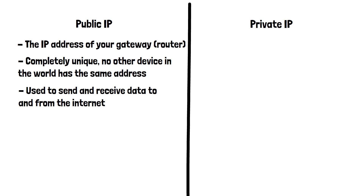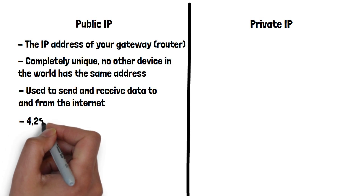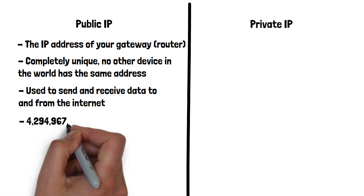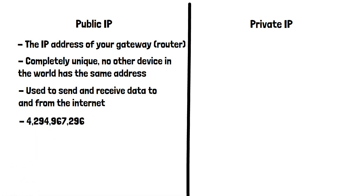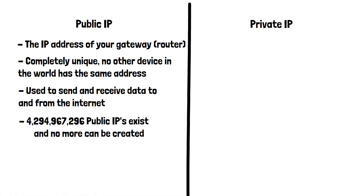Due to the structure of IP addresses, which will be covered in a future video, there are 4,294,967,296 unique public IP addresses. If you take into consideration there are over 7 billion people on earth, you can quickly see an issue.